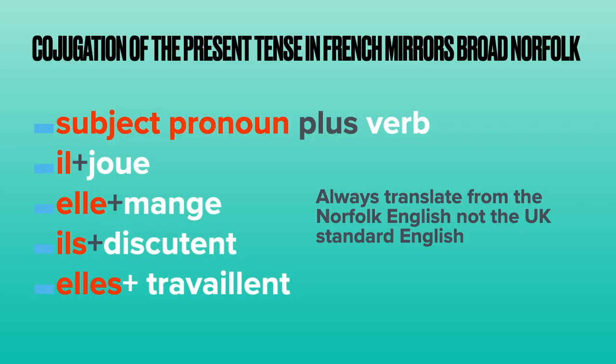What we end up with is a situation where conjugation of the present tense in French mirrors Broad Norfolk. We have subject pronoun — he, she, or they — plus verb. For example: 'il joue', he play; 'elle mange', she eat; 'il discute', they discuss; 'elle travaille', they work. By making that interim step and translating to Norfolk English rather than standard UK English, we eliminate the desire to put in things that don't need to be there — the 'is's' and 'are's' and all that. So we just have 'il joue', 'elle mange', 'il discute', 'elle travaille': he play, she eat, they discuss, they work.